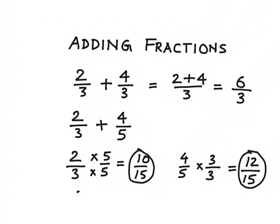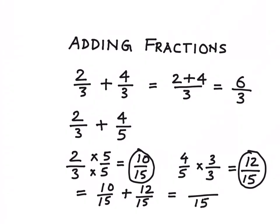So the sum of these two fraction numbers, 10 by 15 and 12 by 15, is equal to: we'll keep 15 in the denominator and then we'll add the numerators. So it would be 22 by 15.